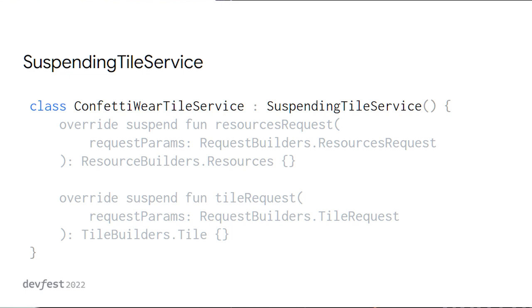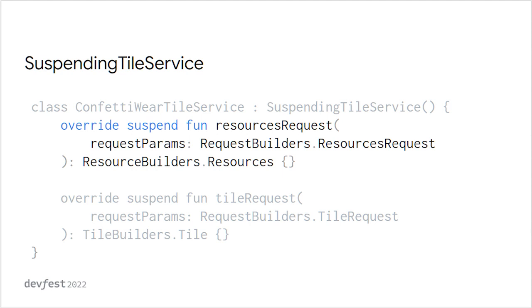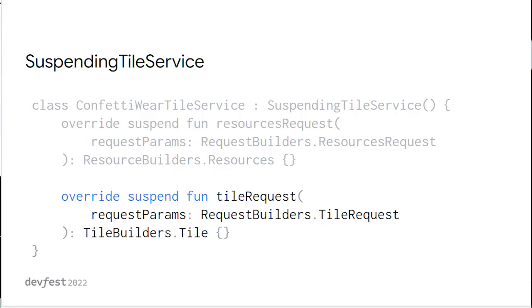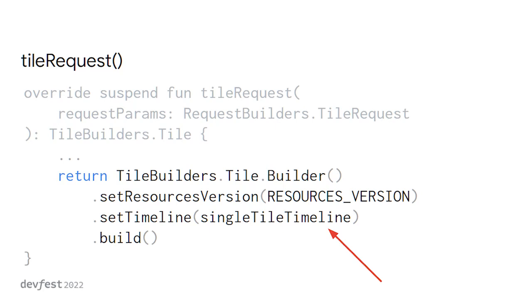You need something called the SuspendingTileService, which works well with Kotlin and coroutines. You must override two functions: the first is onResourcesRequest — if your tile includes pictures or icons fetched from the internet, you use this function to do that; and the second is onTileRequest, which is actually what builds and displays the tile layout. The first connects to the internet or local resources; the second defines what the tile shows.